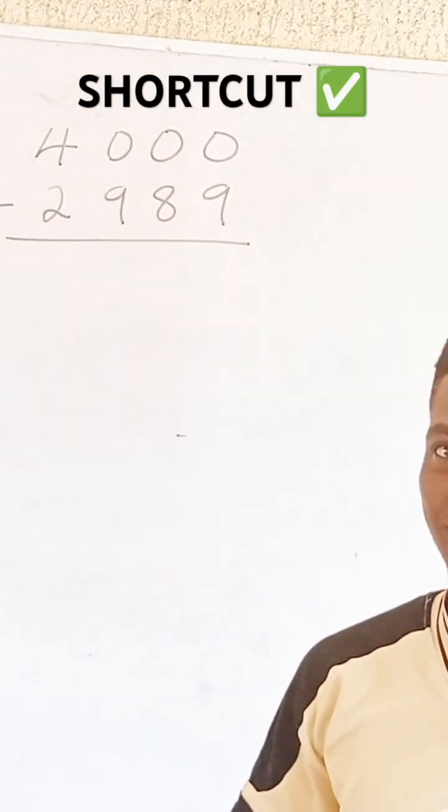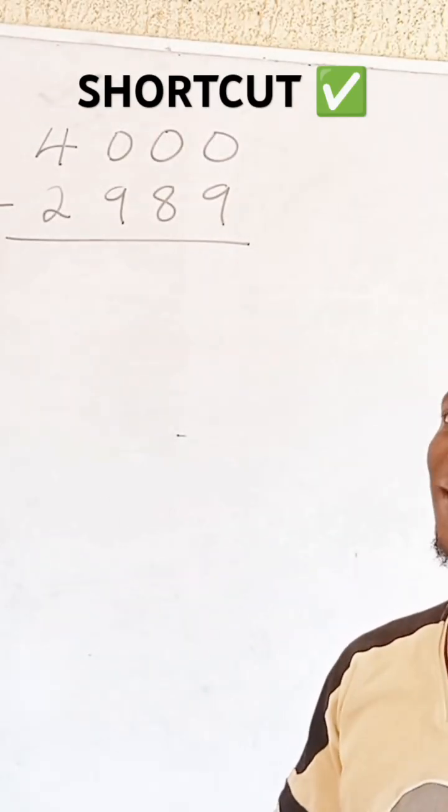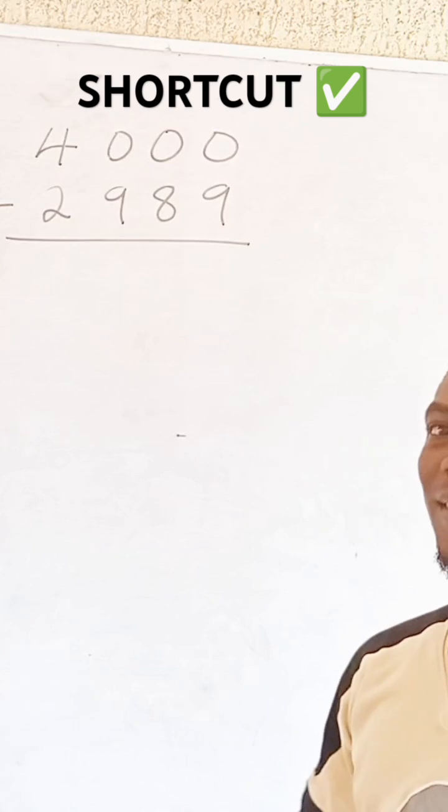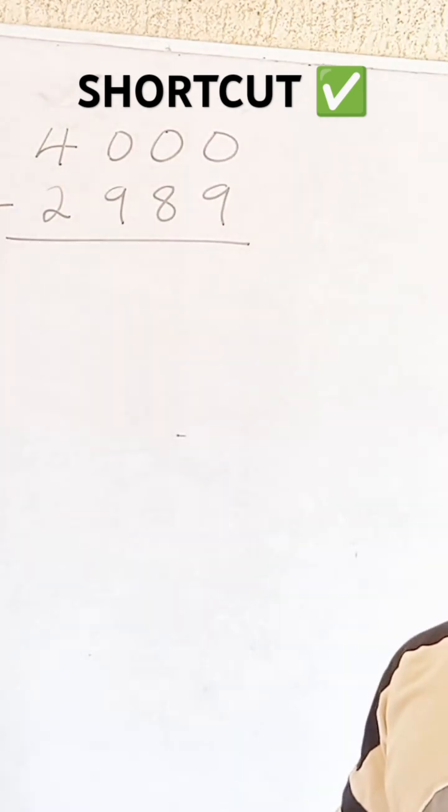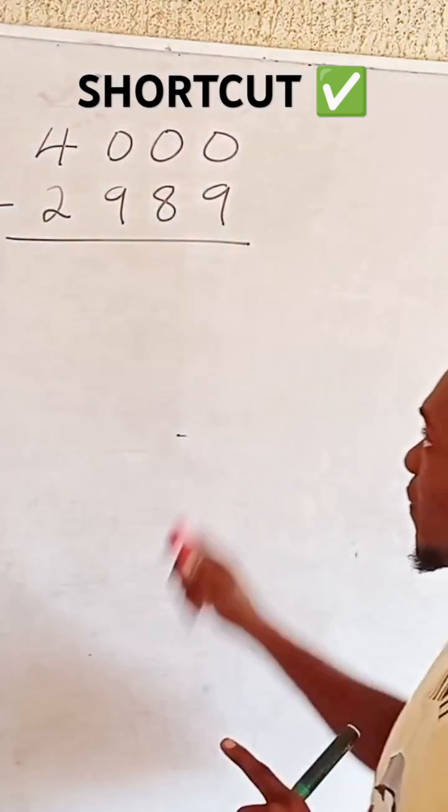Please stop borrowing. The rate of borrowing is too much. Now look at what you're going to do. Pay close attention. Instead of having to borrow, I'm going to give you a shortcut.